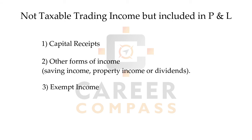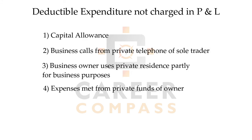The next adjustment covers incomes that are not taxable under trading income but are still included in the P&L. Examples include capital receipts, property income, dividend income, or exempt income. These are taxable but not under trading income, so we must deduct them from the trading profit calculation and tax them separately.